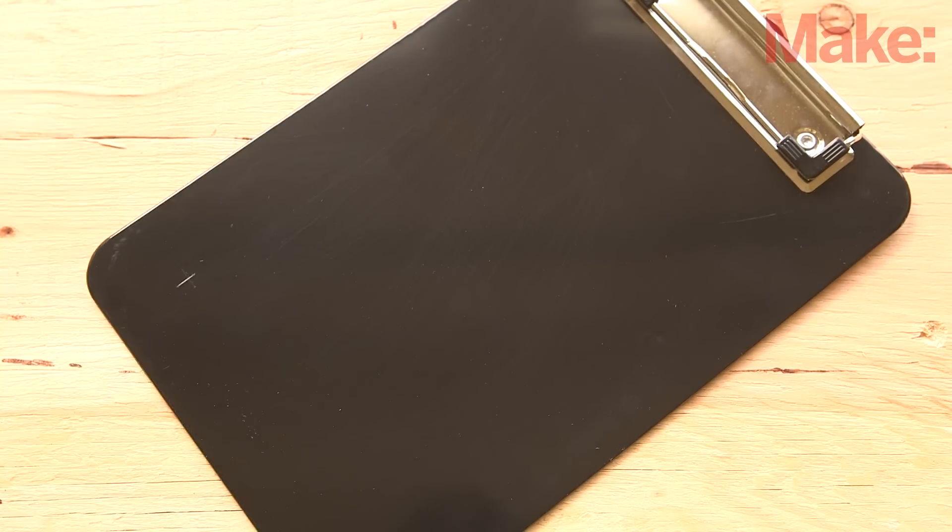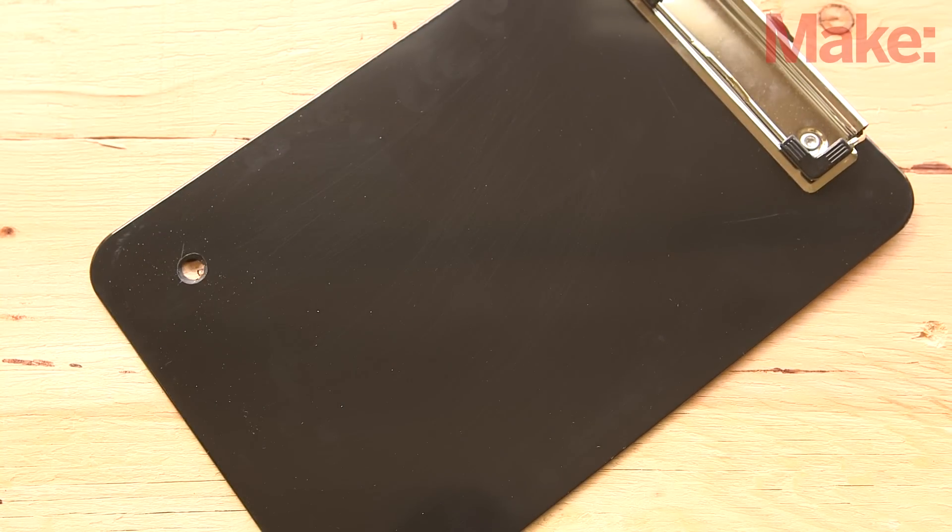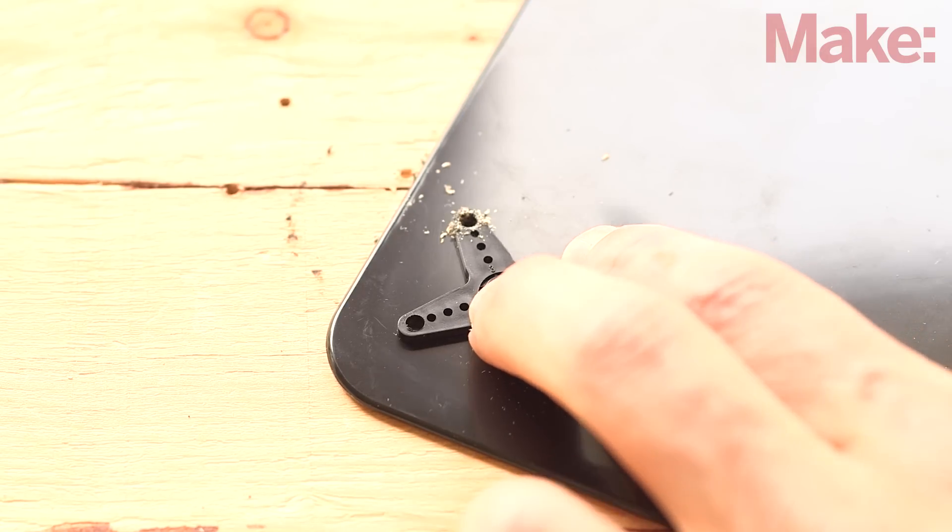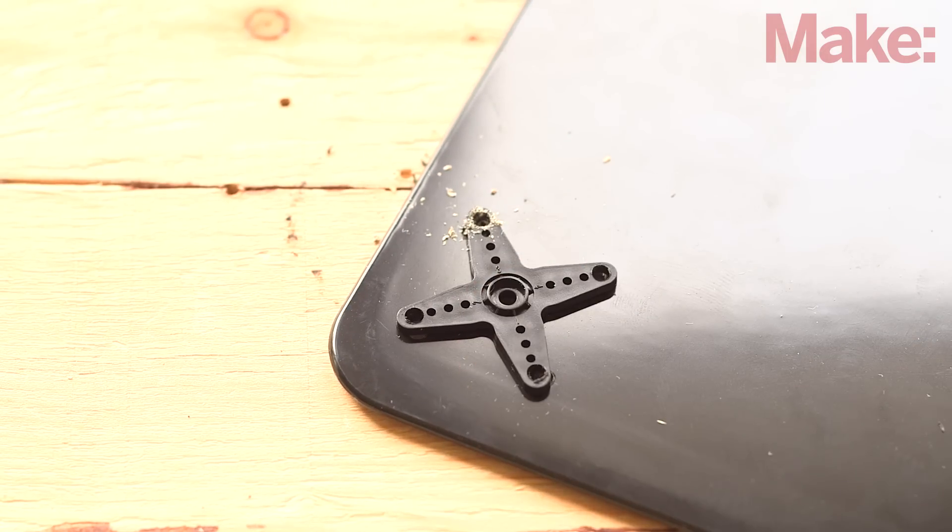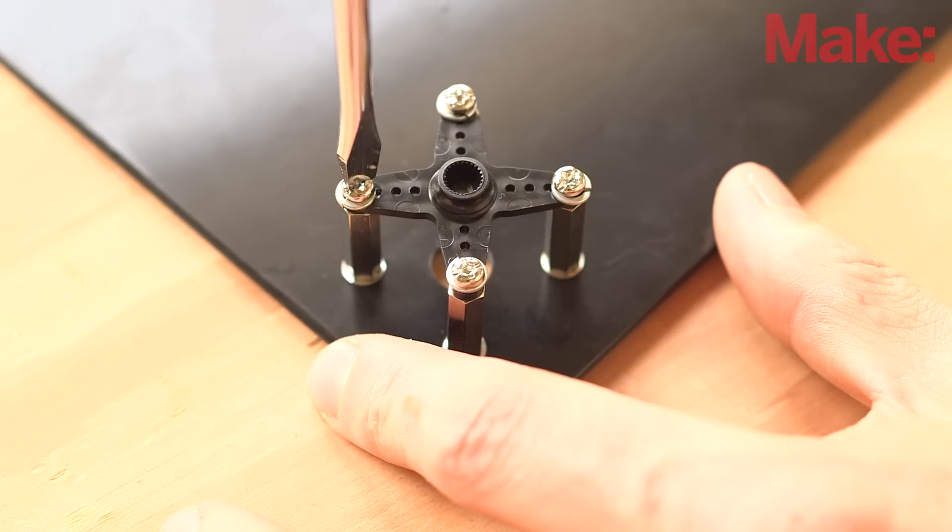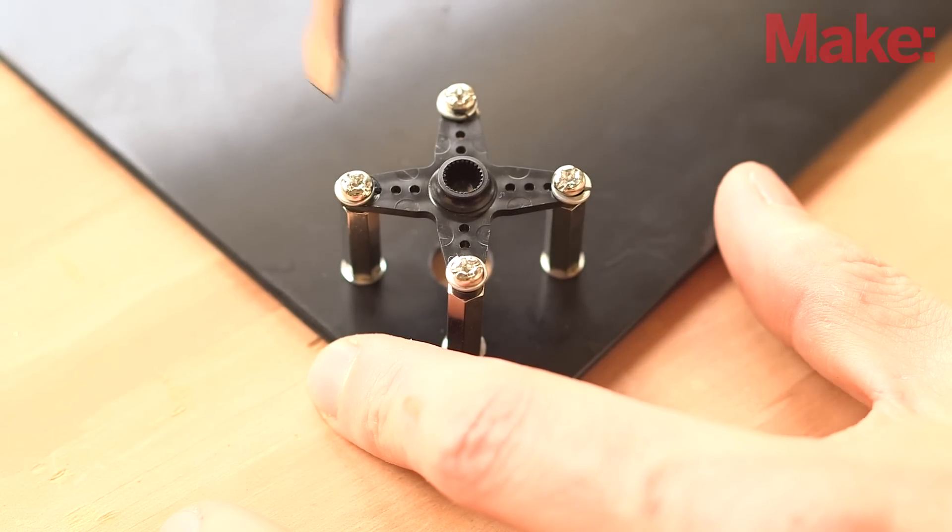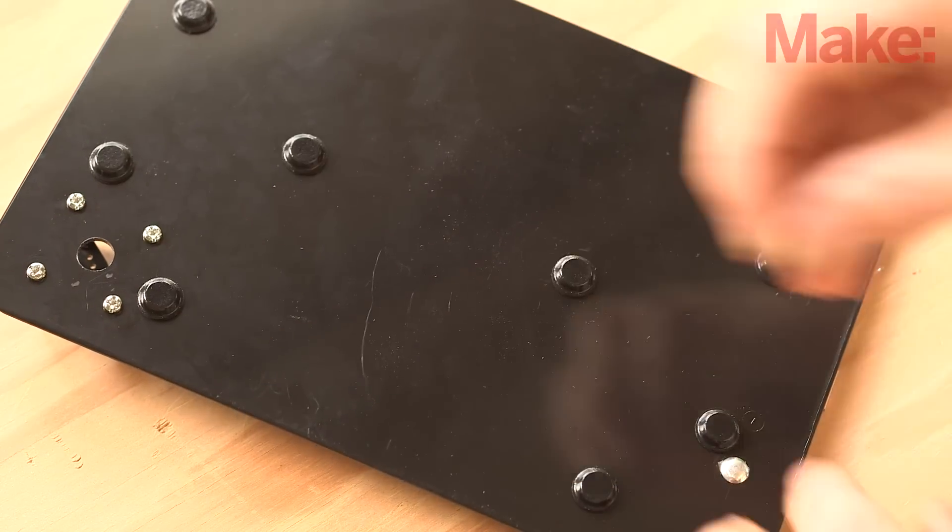Start by measuring and drilling a hole in the lower left-hand corner of the clipboard. Next, using the servo horn as a guide, drill four more holes at the end of each leg of the servo horn. Mount the servo horn to the clipboard using four standoffs and screws, followed by 12 stick-on rubber feet to the bottom of the clipboard.